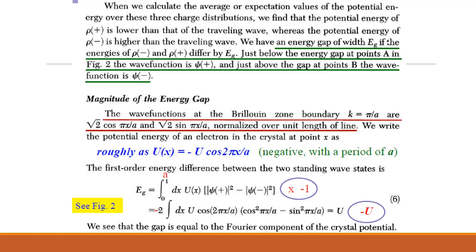The first order energy difference between the two standing wave states is obtained by integrating u of x multiplied by difference in probability density from 0 to a. We see that the gap is equal to the Fourier component of the crystal potential.